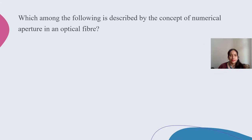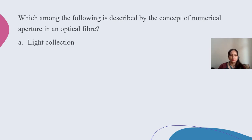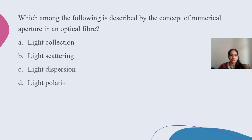The next question is: Which among the following is described by the concept of numerical aperture in optical fiber? Options are light collection, light scattering, light dispersion, and light polarization. This is a very simple question — the correct answer is light collection, as numerical aperture describes the light-gathering ability of the fiber.